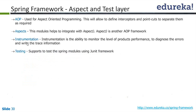The Aspects module helps integrate with AspectJ. AspectJ is another AOP framework — Spring has its own AOP framework, and AspectJ is a separate framework with AOP capabilities that can be integrated with Spring. AspectJ is typically annotation-driven. Instrumentation is the ability to monitor product performance, diagnose errors, and write trace information — it is a kind of profiling capability achievable through the instrumentation module.